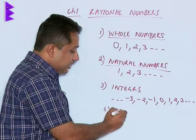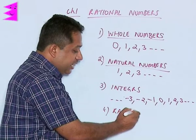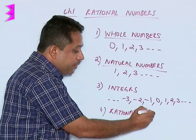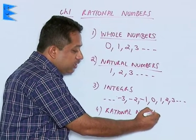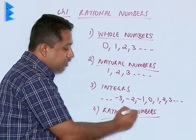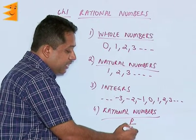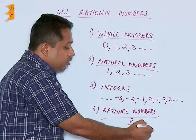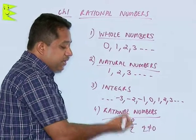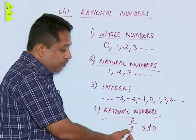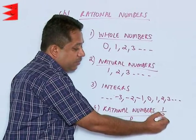Rational numbers are numbers which can be expressed in the form of p upon q. Now what does p and q represent? P and q are numbers, but q should not be equal to 0. P and q can be any number, but q should not be equal to 0. So we can have any fraction like 1 by 2, 3 by 5, 7 by 8—all these are rational numbers.